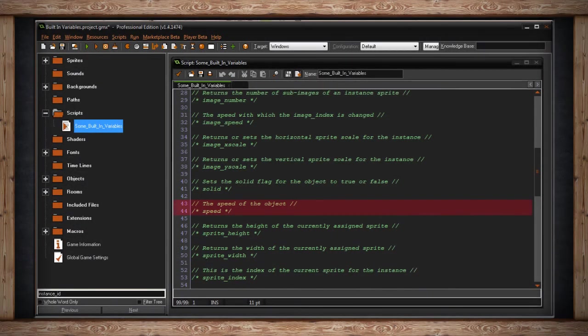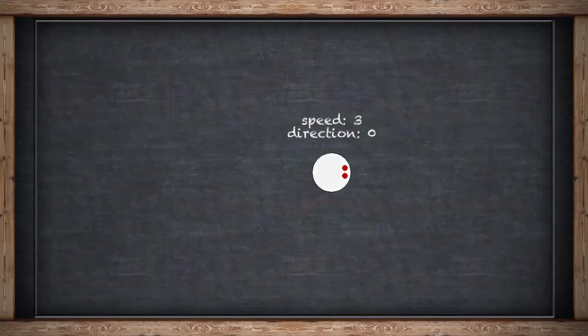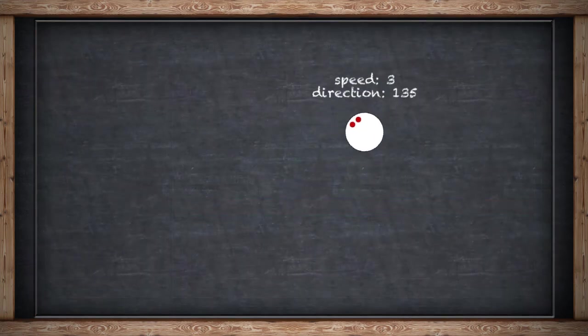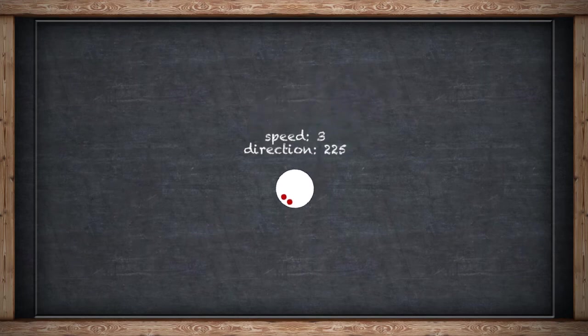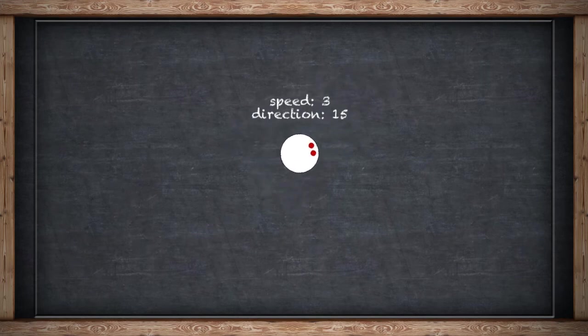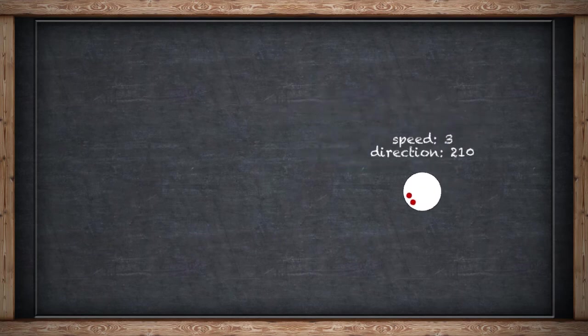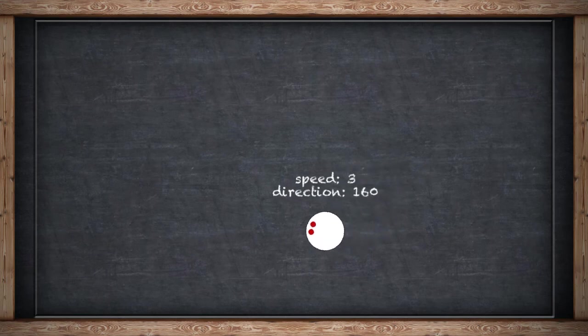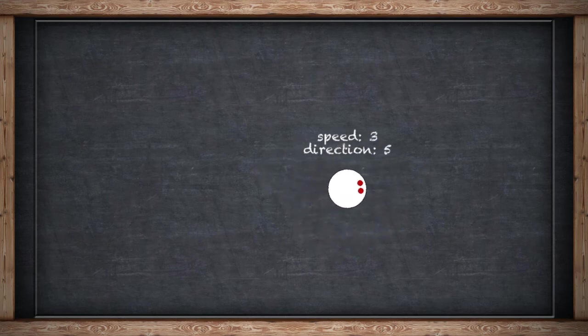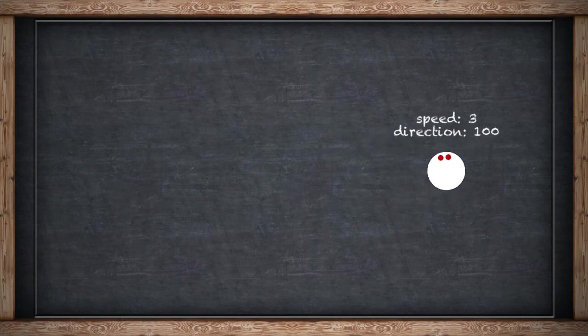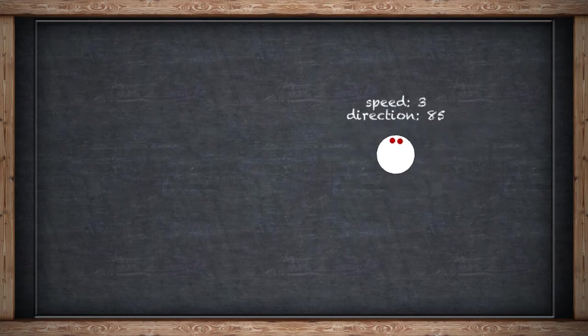Speed is simply the speed of the instance in pixels per step. The difference between speed and hSpeed or vSpeed is that speed has no direction — you have to set the direction of your instance separately. For example, direction 0 with speed 3 means your instance moves 3 pixels per step to the right. Or set direction to 45 and your instance moves to the top right at that speed. Similar to hSpeed and vSpeed, this variable is affected by friction.